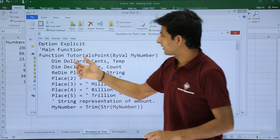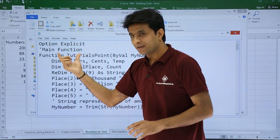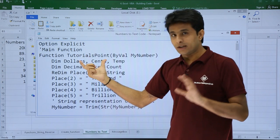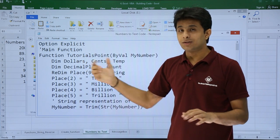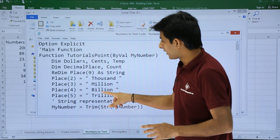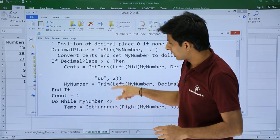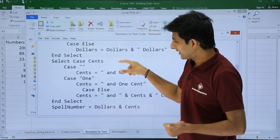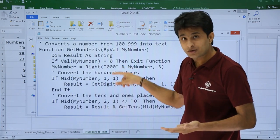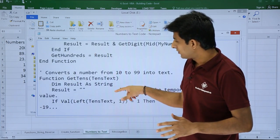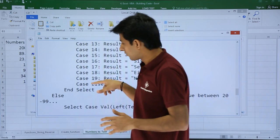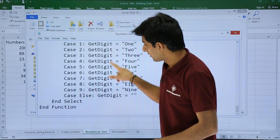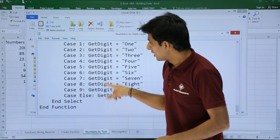That's the code written here. Option Explicit, main function number to text code, function TutorialsPoint. You can rename this function if you want. This is a bit lengthy code - there are select case statements, if-else, they've used many string functions and so on. I'm scrolling down here... so finally it is the end function.